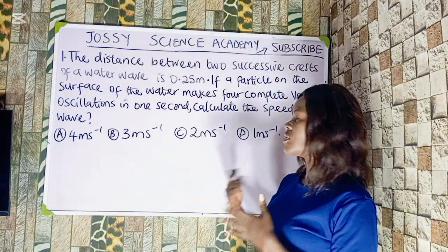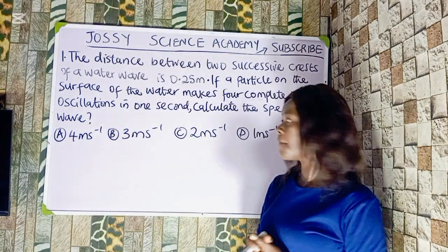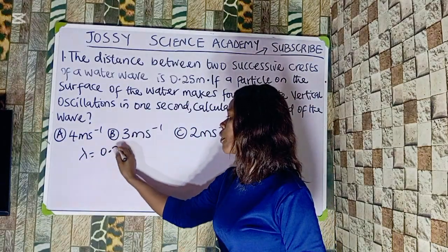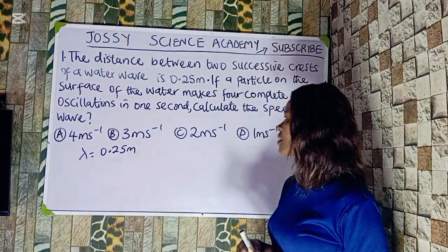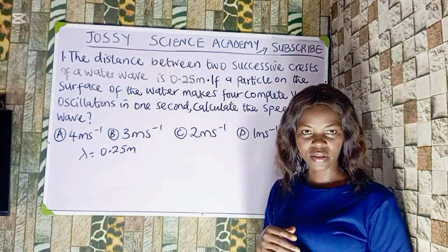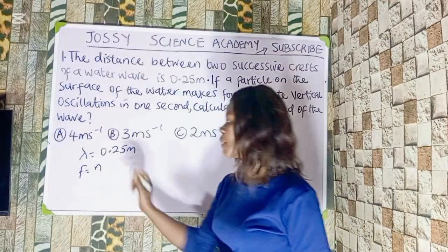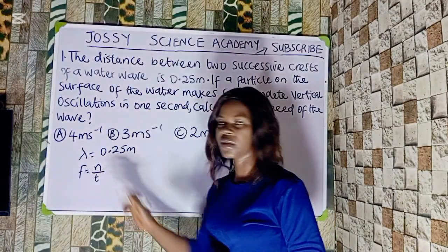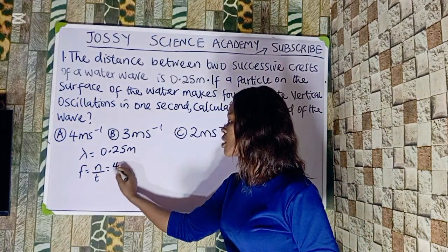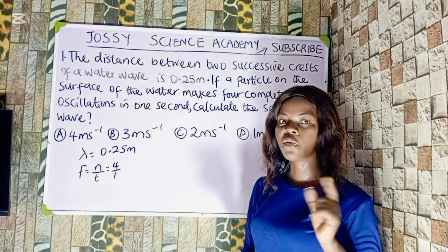In this question, we must remember that successive crest or successive trough of a wave is said to be the wavelength of the wave. So lambda is equal to 0.25 meters. Now, this particle makes four complete vertical oscillations in one second. Frequency is the number of complete oscillations that the particle makes in one second. That number of complete oscillations is 4, so our frequency is 4 hertz.